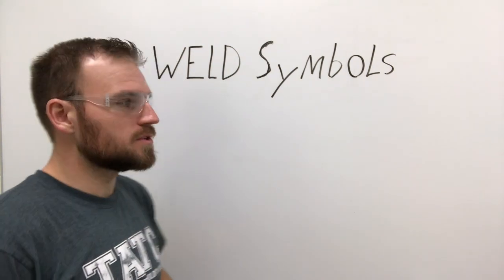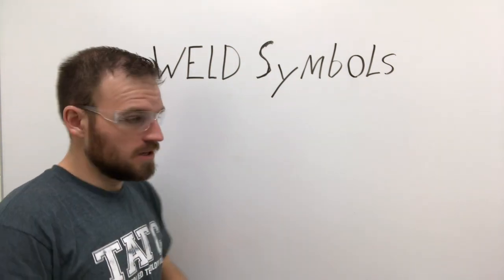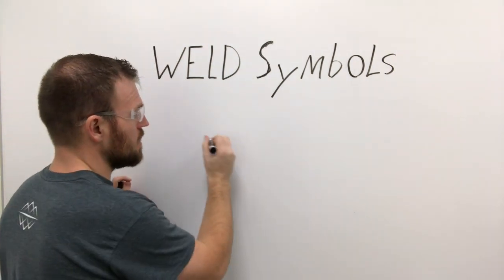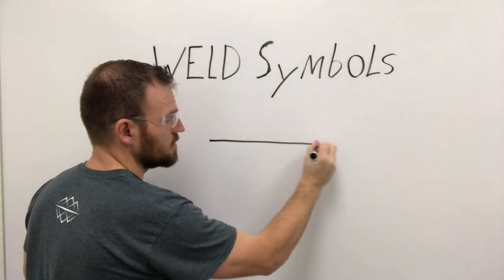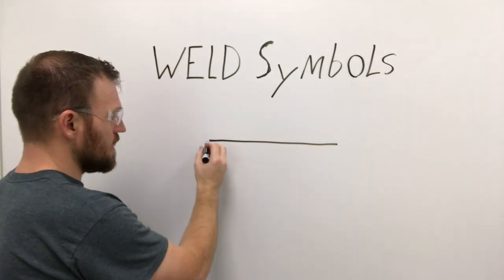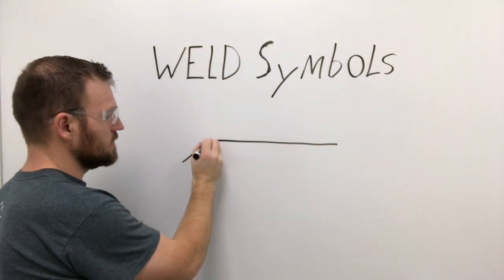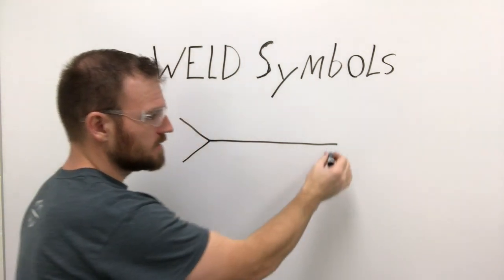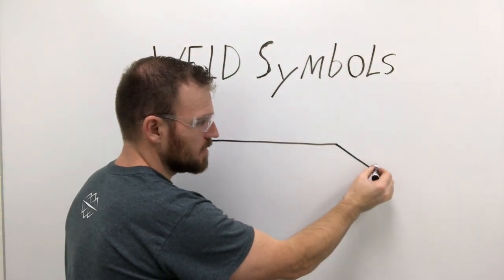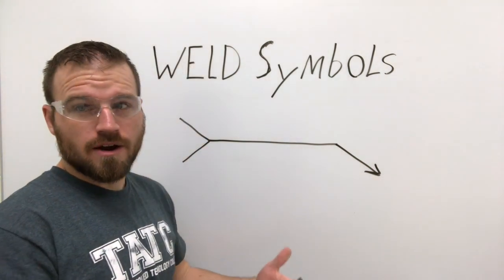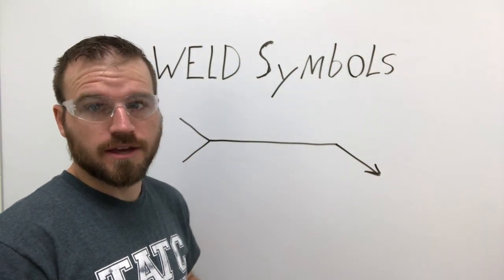Now all weld symbols start with a base. This base is made up of a reference line, which is the straight line. It's going to have a tail, and it's going to look something like that. And then it's going to have an arrow, otherwise known as a leader, depending on who you're talking to.